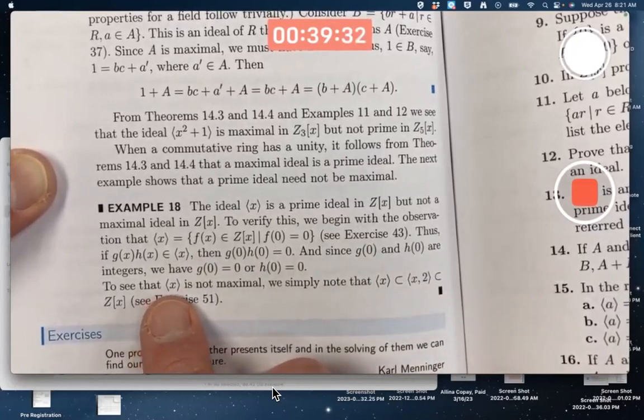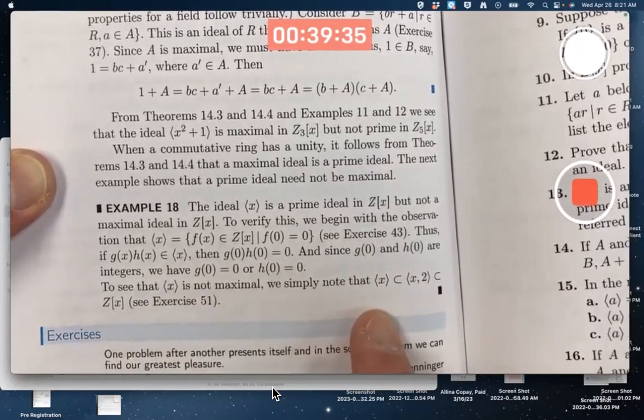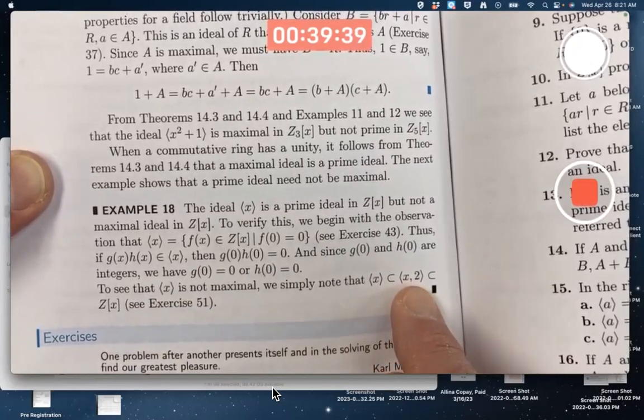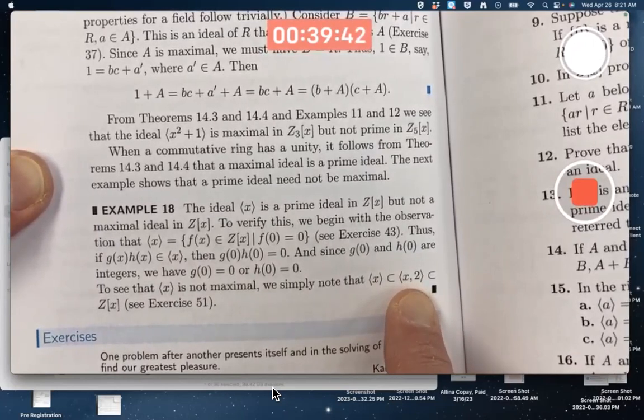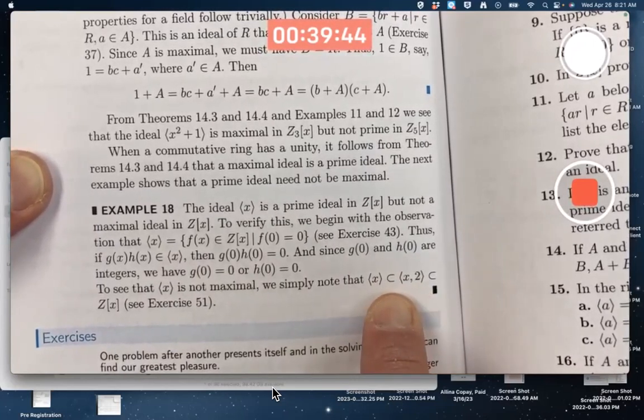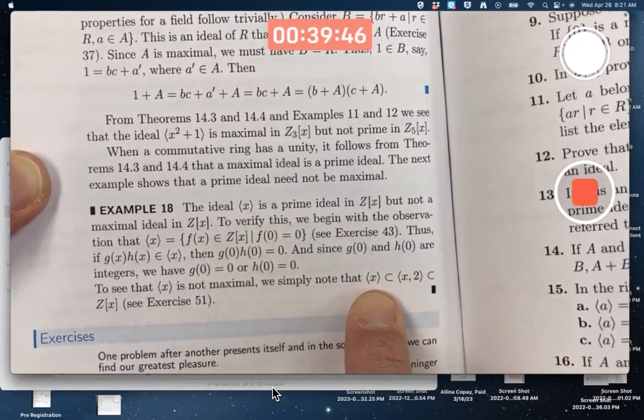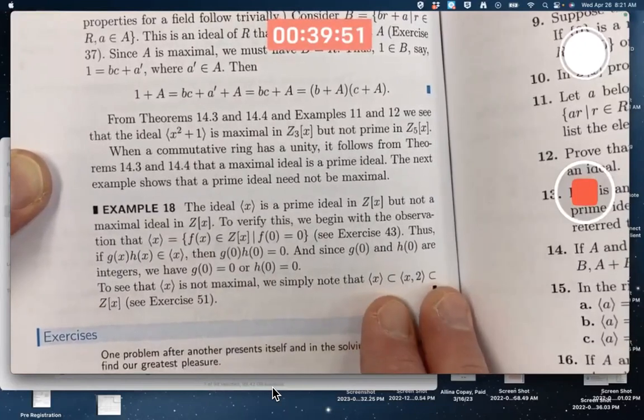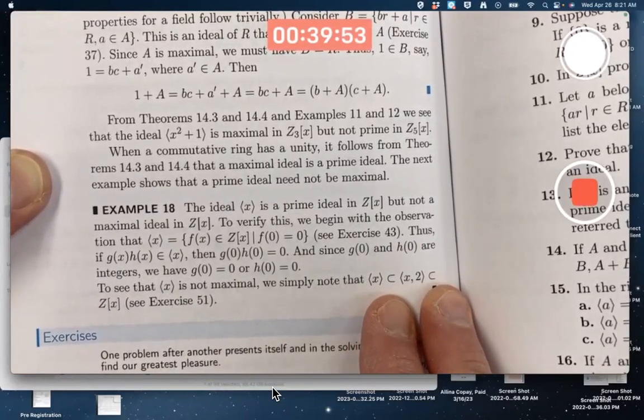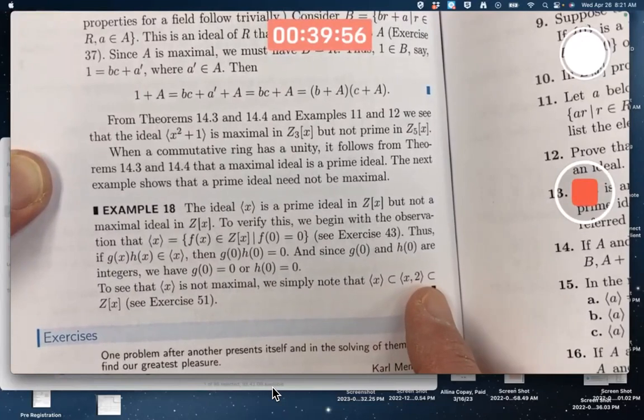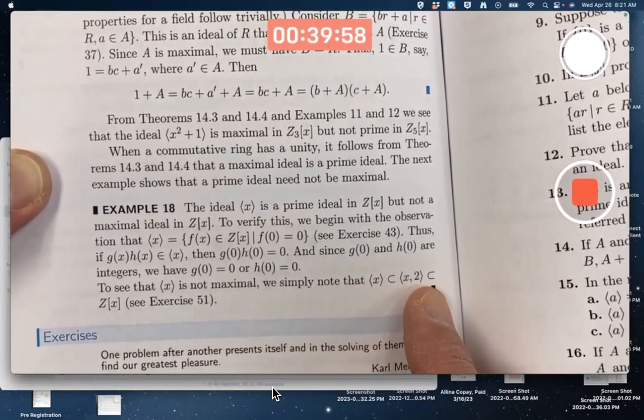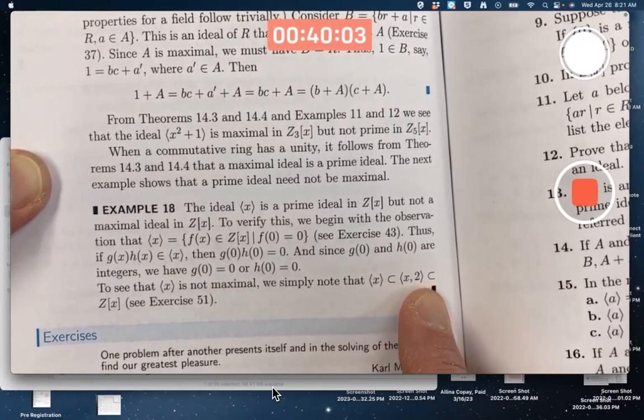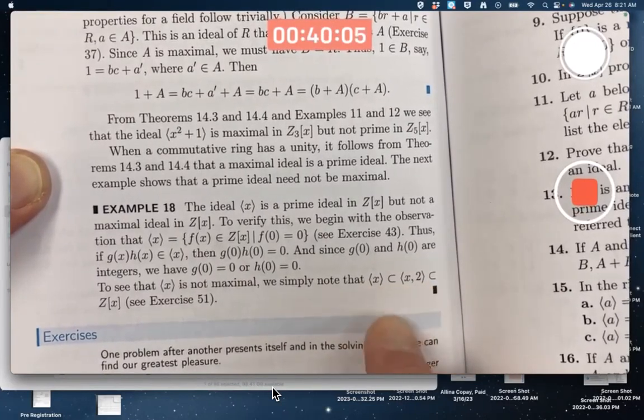To see that this is not maximal, simply note that this is true: there is an ideal strictly between, so to speak, with regard to set inclusion, the ideal we're thinking about in the entire ring. And with these subset symbols, the author is meaning to imply that it's not equal to, because you don't see a line under them.